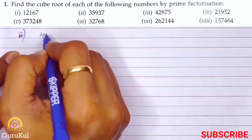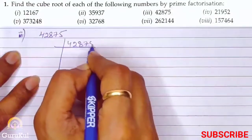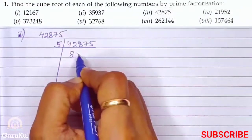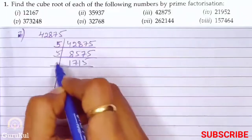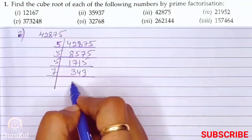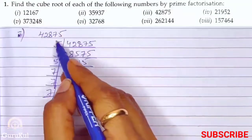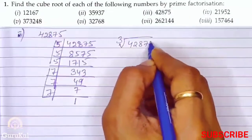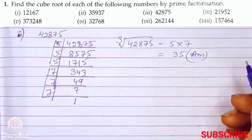Part 3 — the number is 42,875. Since the last digit is 5, we start dividing by 5. 5 into 42,875 gives 8,575. Again by 5 gives 1,715. Again by 5 gives 343. Now 7 into 343 gives 49. 7 into 49 gives 7. 7 into 7 gives 1. So 5 appears 3 times and 7 appears 3 times. Hence, the cube root of 42,875 is equal to 5 times 7, which gives us 35. That is the answer.